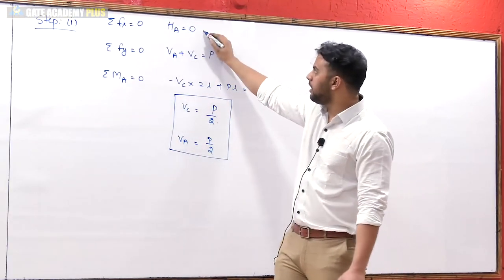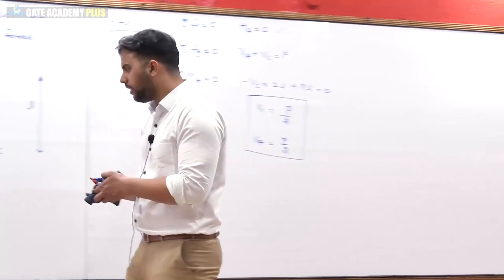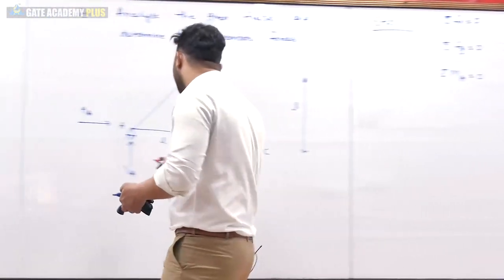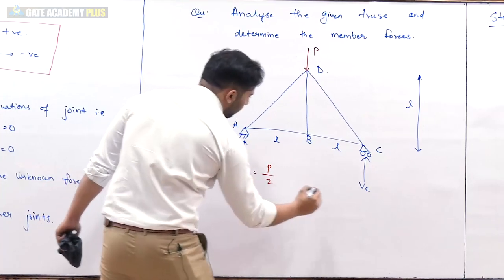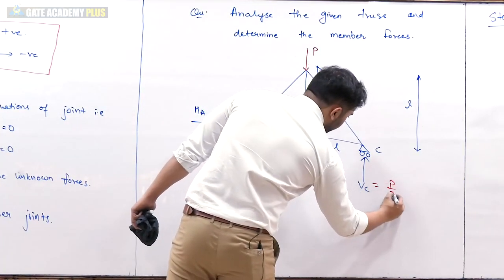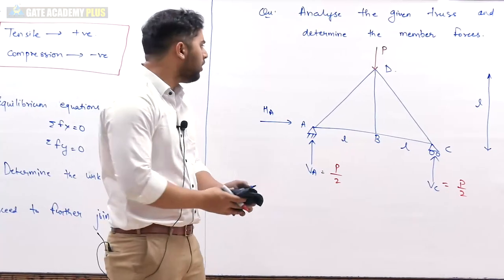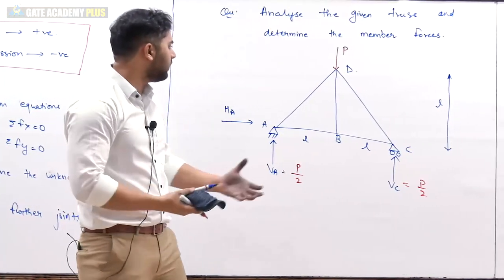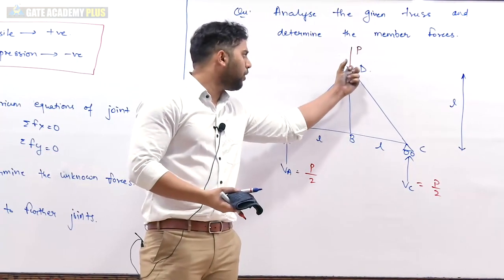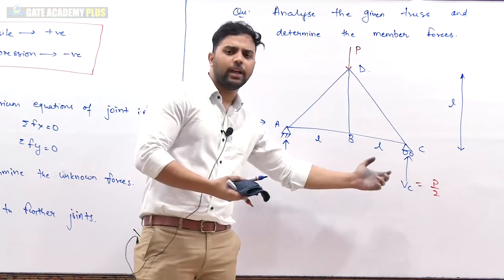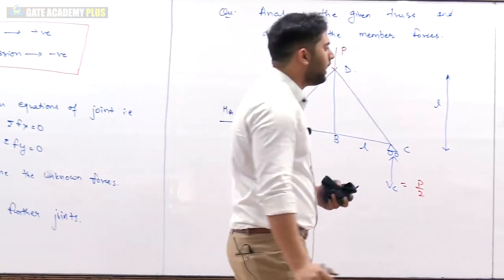So we have found all three support reactions: Va, Vc, and the horizontal reaction Ha. Va = P/2, Vc = P/2. Since the structure is symmetrical with a center point load, the reactions distribute equally.